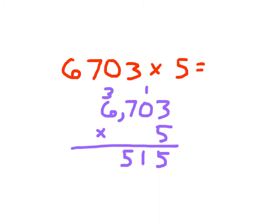Write 5. Regroup the 3. And then finally, 5 times 6, which is 30. Plus 3, which is 33. 6,703 times 5, equaling 33,515.